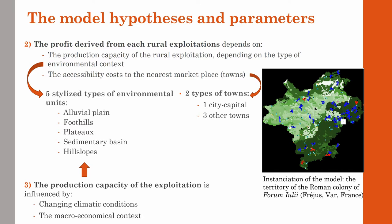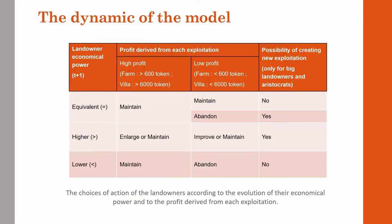The second external factor is the macro-economic context within the Roman Empire, which might have an impact on the economic power of the landowners — for example, according to fluctuations in fiscality and the state of the market. However, this economic factor has not been implemented yet.